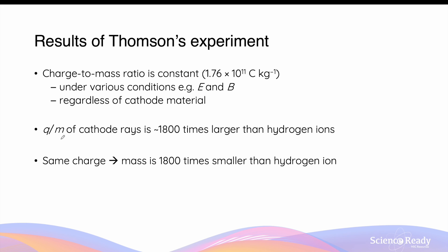The charge-to-mass ratio was also compared to that of hydrogen ions. It was shown that it was approximately 1,800 times larger than the charge-to-mass ratio of hydrogen ions. Thomson assumed that the charge of cathode rays and hydrogen ions are the same, and as a result proposed that the mass of these cathode ray particles is roughly 1,800 times smaller than that of the hydrogen ion.